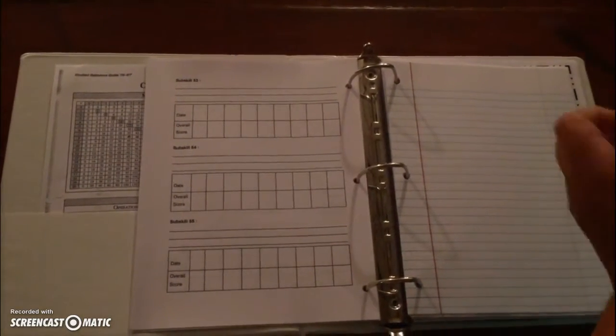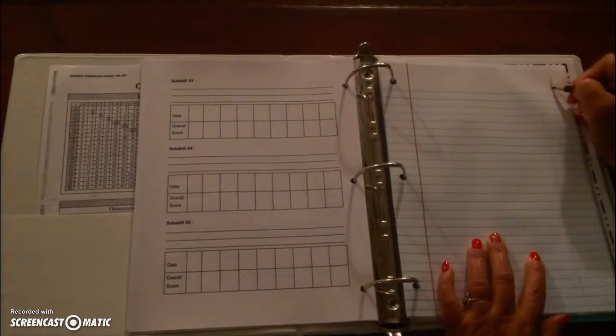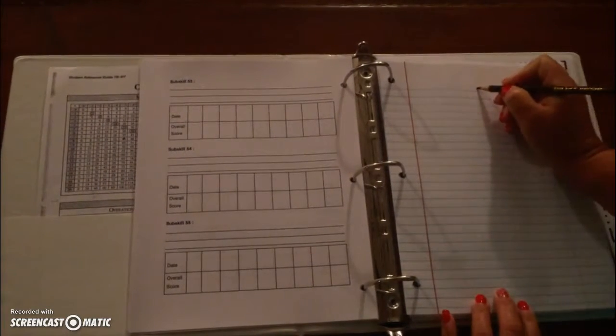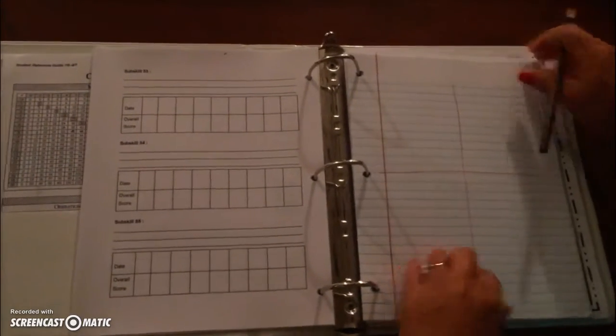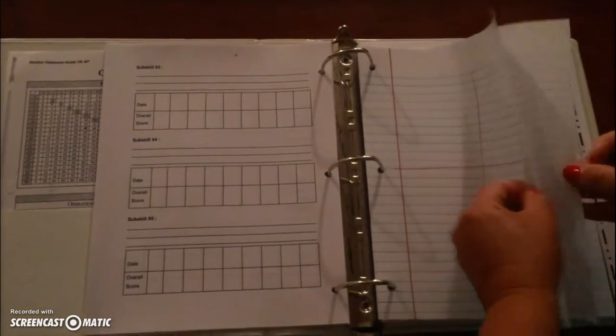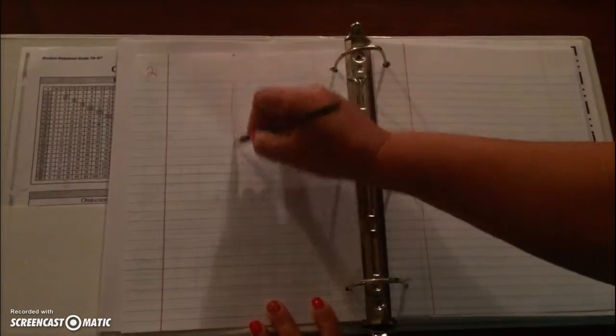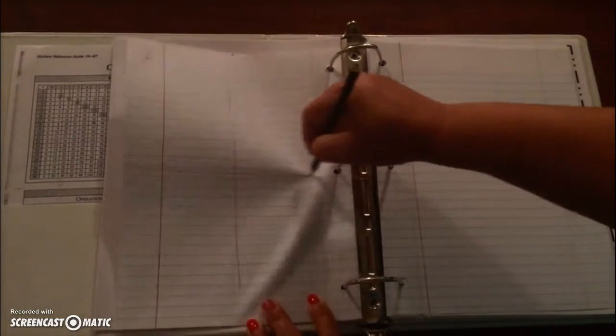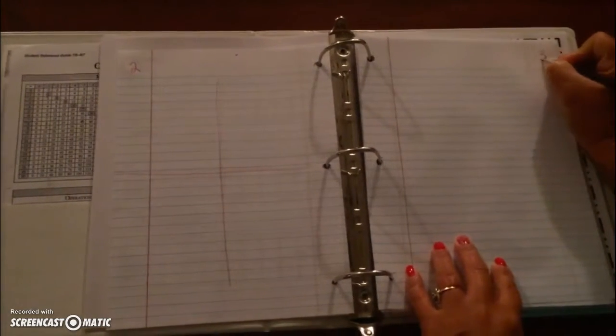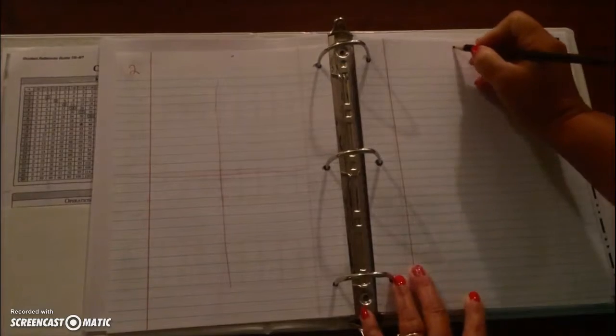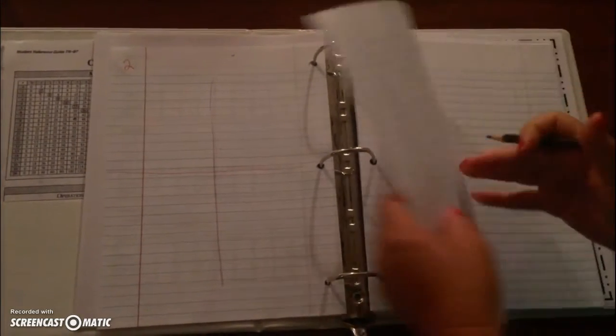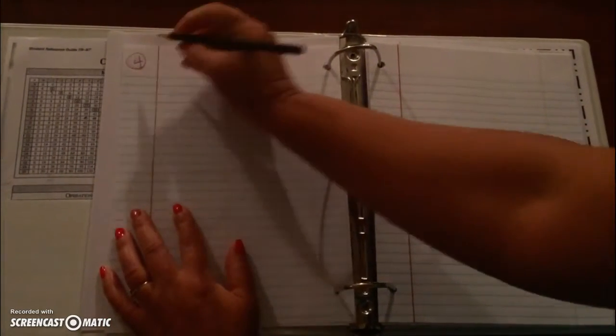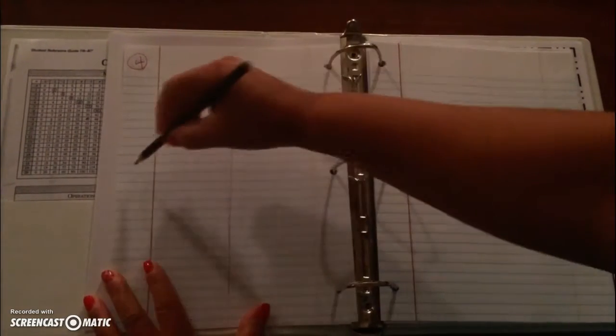Then you have your notebook paper as the next thing in your binder. You need to number each page on the outside corner of the page away from the hole punch and divide it in fours. Turn the page and you will put a 2 in the top outside corner and divide the page into fourths. And continue. You have 3. Divide your page into fourths. This will allow you to have space to work each problem out in math lab.